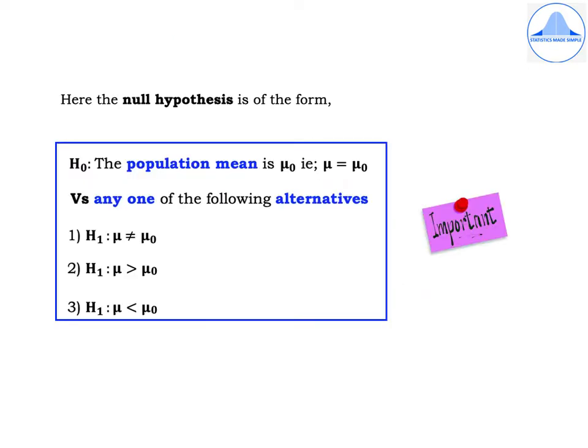You will see that the null hypothesis and the alternative hypothesis are exactly the same as what I had explained under large sample tests for test for single mean. Here the null hypothesis is of the form H0: the population mean is mu0, i.e. mu equal to mu0, versus any one of the following alternatives: first H1 mu is not equal to mu0, second H1 mu is greater than mu0, and third H1 mu is less than mu0.